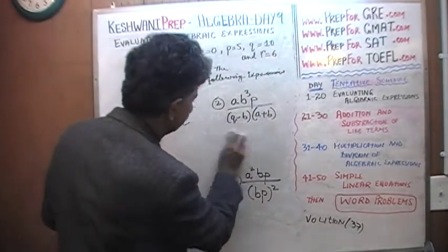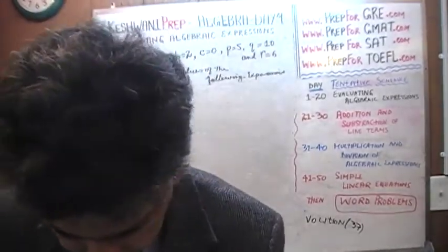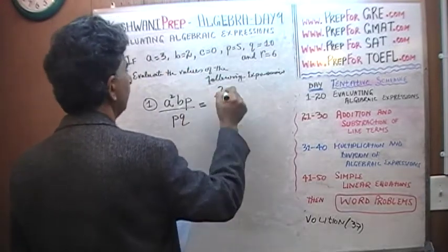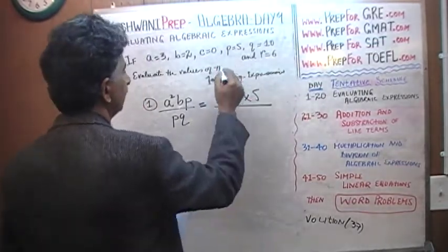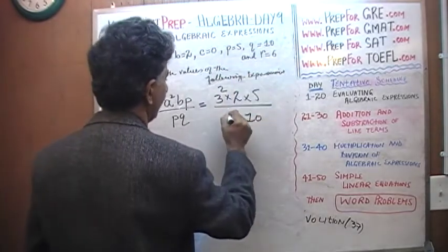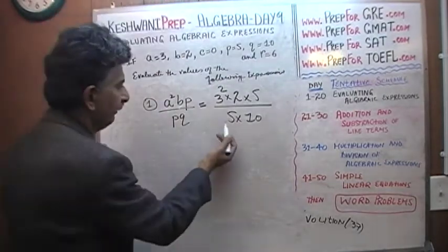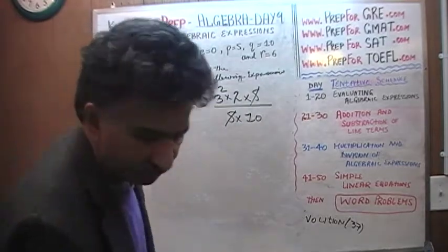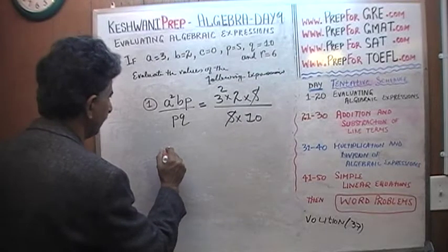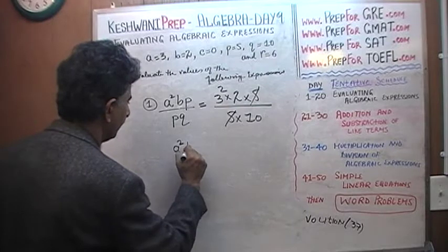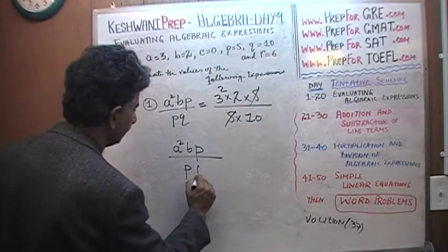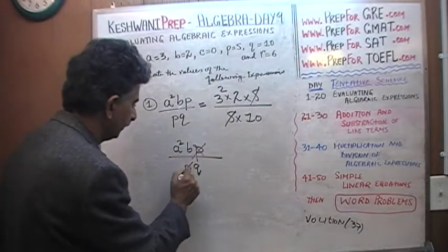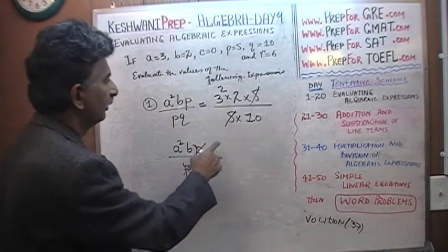Number 1: A squared times B times P over P times Q. That's 3 squared times 2 times 5 over 5 times 10. Notice what happens — we see a 5 on the top and a 5 on the bottom. The 5 on the bottom represents P, and the 5 on the top also represents P, so we can cancel them. It simplifies to A squared times B over Q.